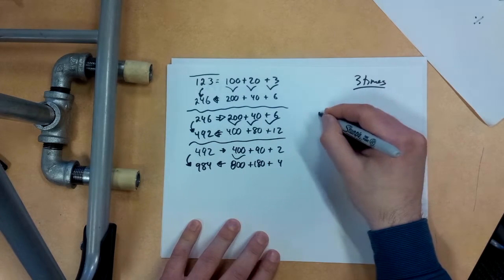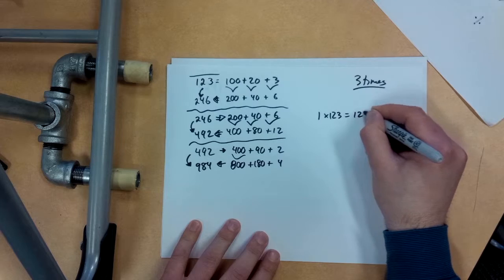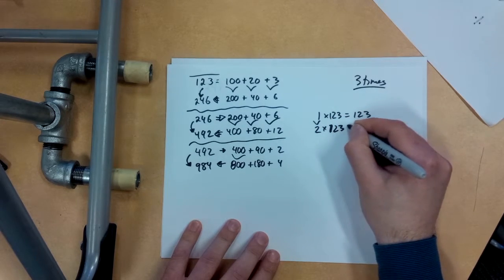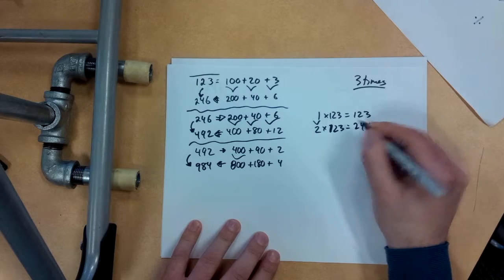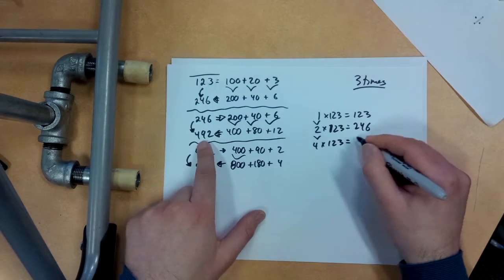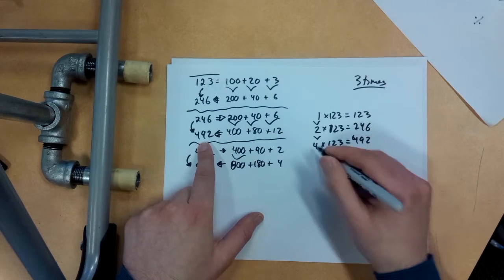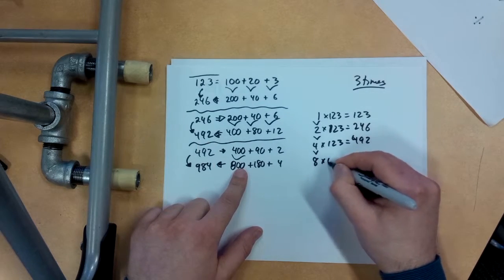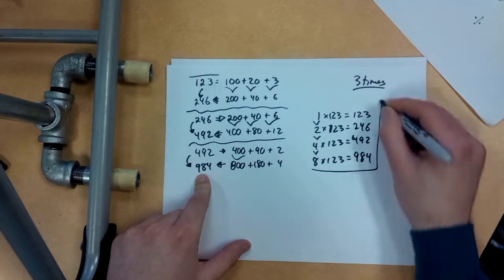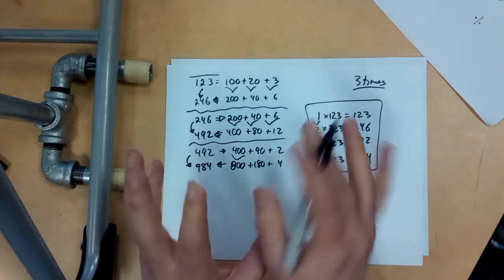In other words, 1 times 123 is 123. So if I double that, 2 times 123 is 246. If I double that, 4 times 123 is 492. If I double that again, 8 times 123 is 984. So look at all this cool math that we're able to do just by doubling.